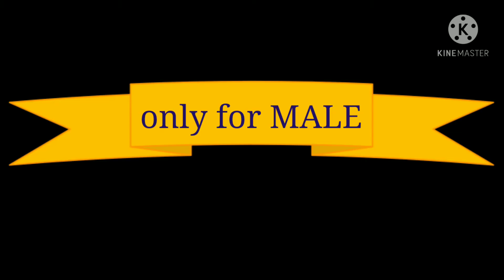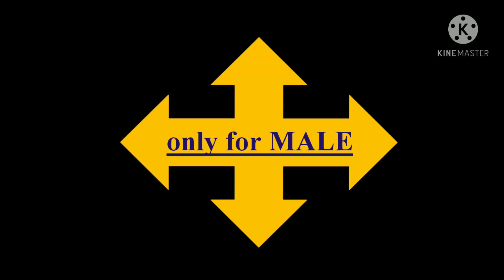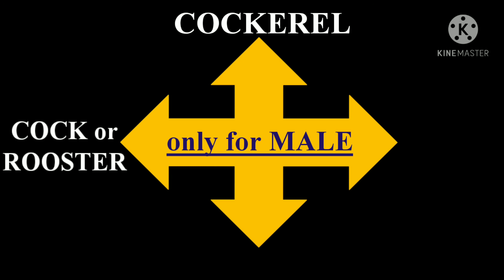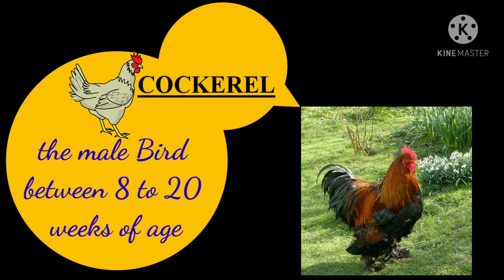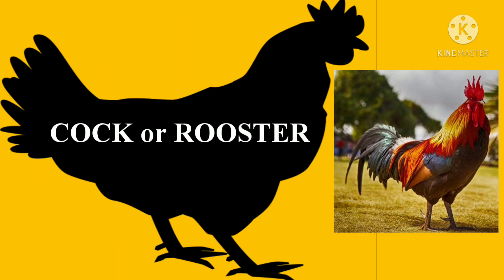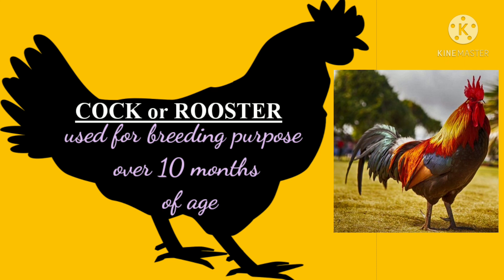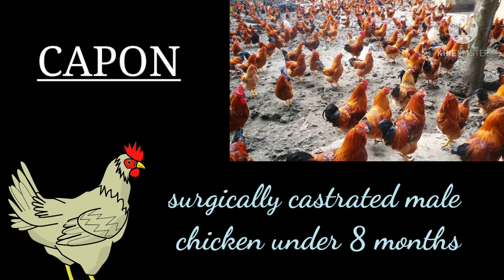Let's see our last category — terms only used for males. In this category we are going to study about cockerel, cock or rooster, capon, and stag. First, cockerel — the male bird between 8 to 20 weeks of age. Then cock or rooster — a mature male chicken used for breeding purposes, over 10 months of age. Then capon — a surgically castrated male chicken under 8 months.